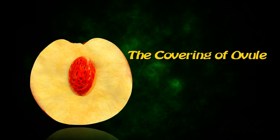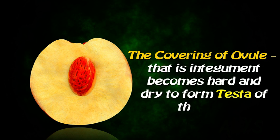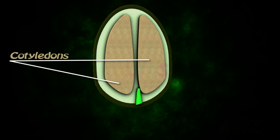The covering of the ovule, that is integument, becomes hard and dry to form testa of the seed. The other part of the seed is the cotyledon, which are stored food in the form of starch and protein.